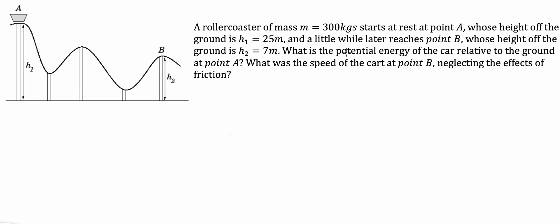What is the speed of the car at point B, neglecting the effects of friction and energy lost to sound, etc. So the first part of the question: what is the potential energy of the car relative to the ground at point A? This is quite a simple question. We have a standard potential energy formula, which says the potential energy of an object is equal to its mass times the force due to gravity times the height of the object above ground — in this case, H1.